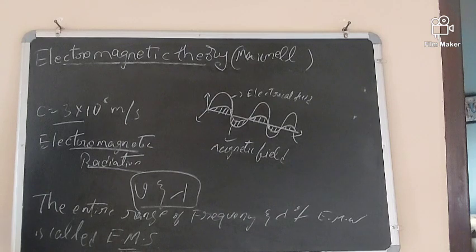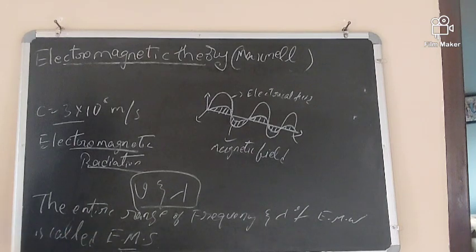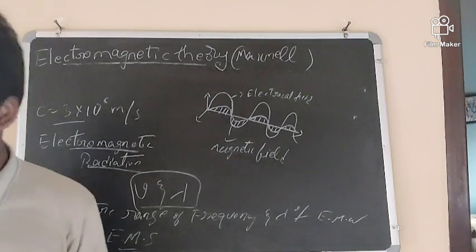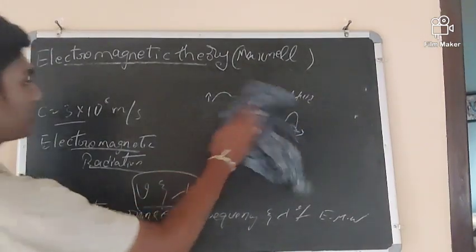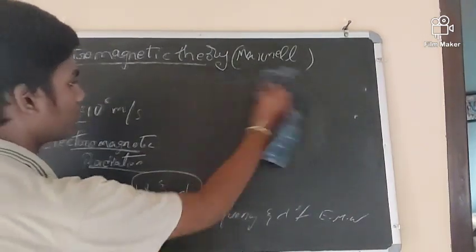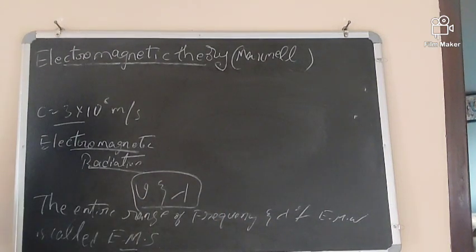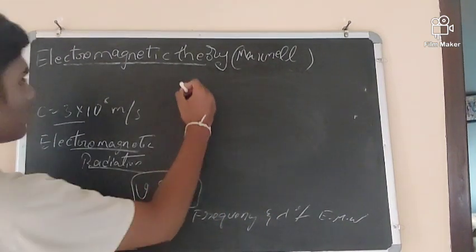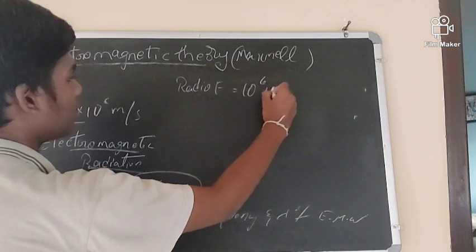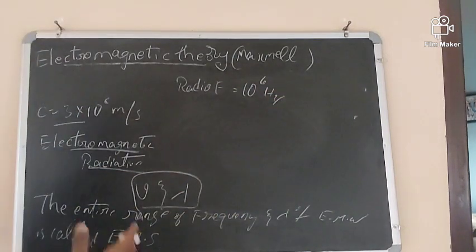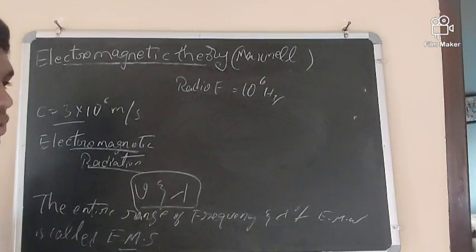Due to differences in frequency and wavelength, electromagnetic waves are divided according to their frequencies and wavelengths. For example, radio waves have a frequency of 10⁶ Hz, and they are used for broadcasting.